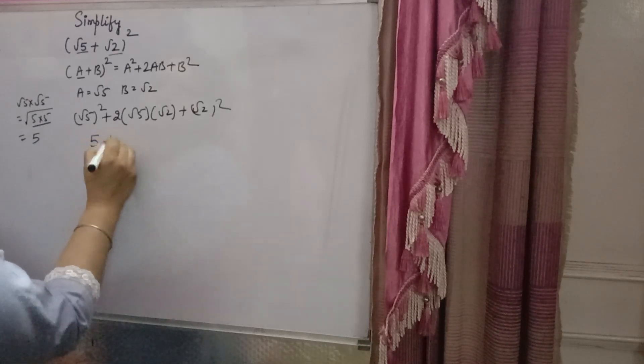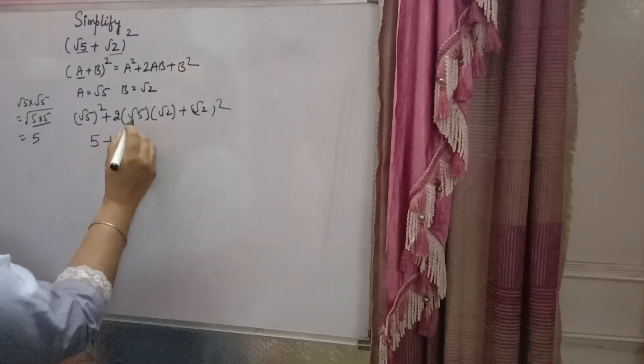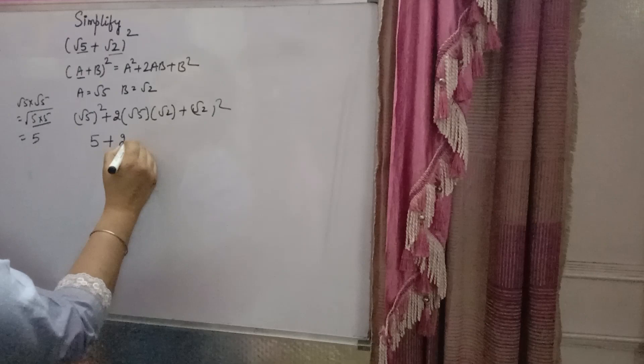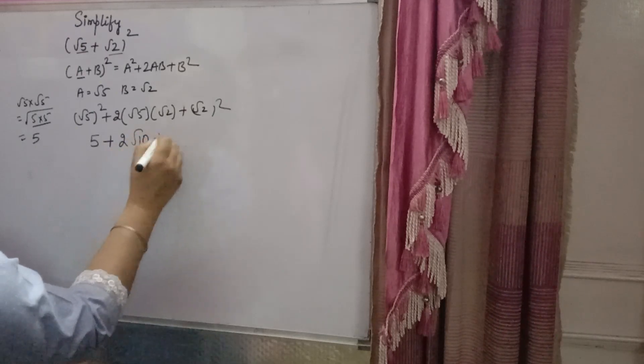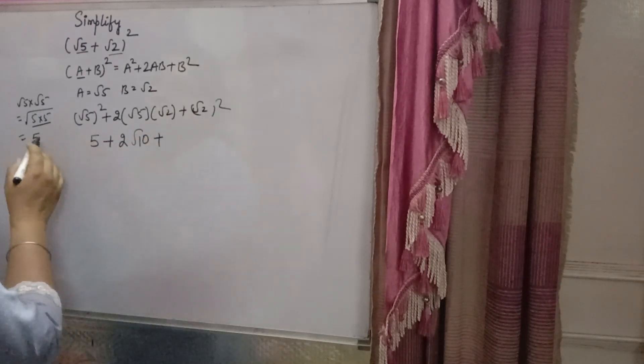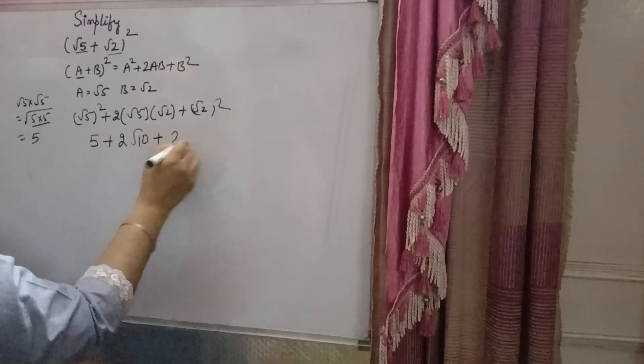So 5 plus 2 times √5 times √2, which is 2√10, plus (√2)². The same way, you will get √2 times √2, which equals 2.